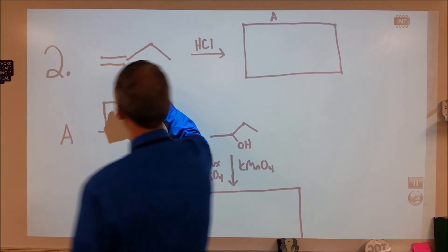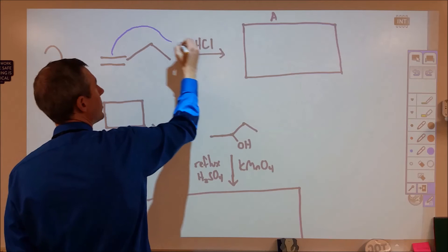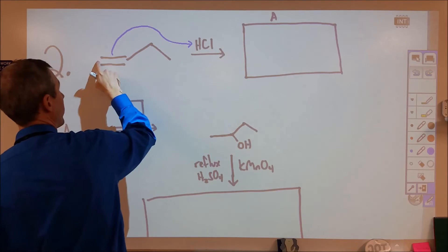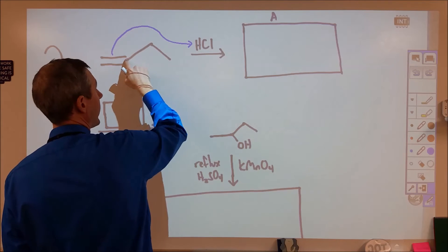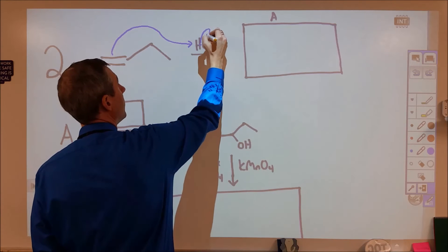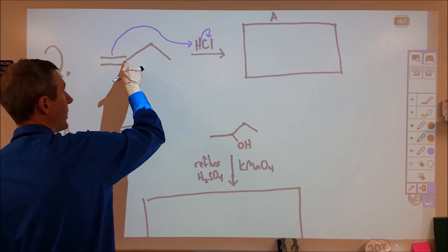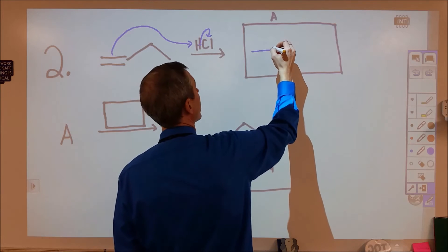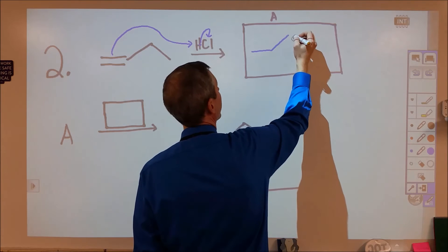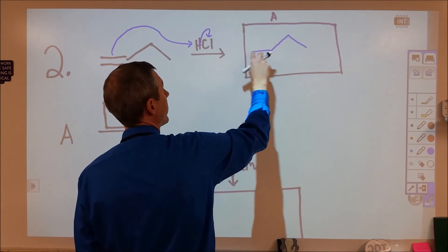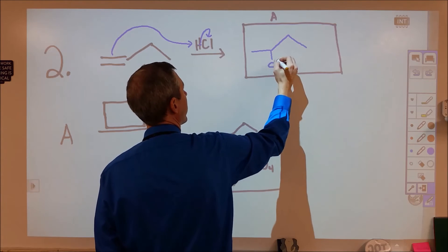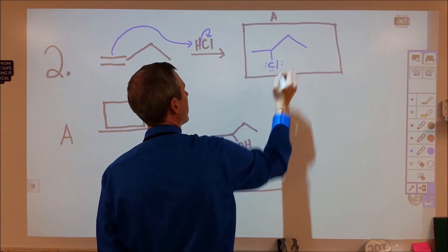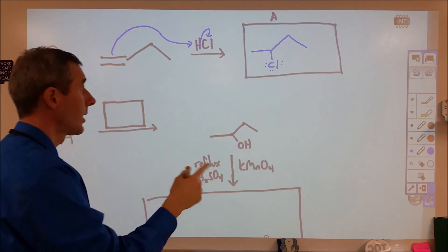So for instance, in this one, the double bond here is going to form a bond with the hydrogen. That's going to form on this carbon, forming a carbocation here. The chloride will then come in and form a bond here. So I'm going to draw us in the same manner, even though the 3D nature of this will change a little bit. We're going to have this, where the hydrogen goes to this carbon, and the chlorine goes to this carbon. All right, that's compound A.